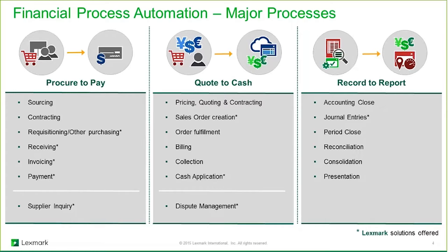The next major process is order to cash. This is a process for enabling faster, more accurate handling of receivables. The goal is to reduce days sales outstanding, or DSO, and permit access to current information about customer payments. The record to report process is used for closing transactions and transferring journal entries for end-of-period financial reporting. Our solutions address all of these and are being implemented to evolve further.